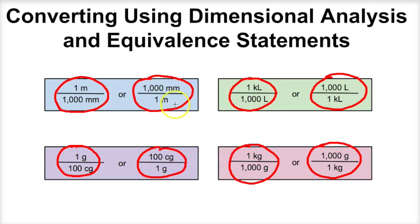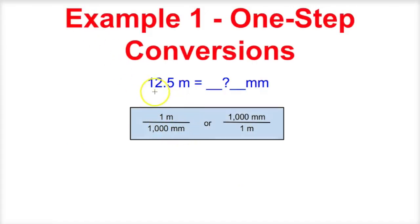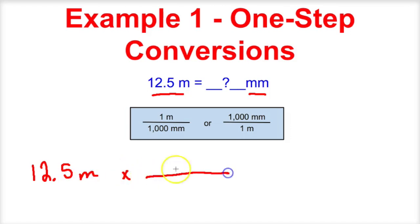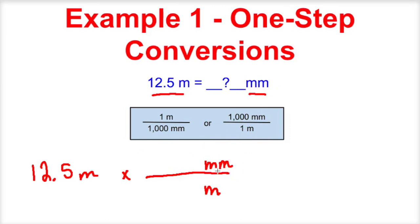So let's apply the concept of equivalent statements to solve several different types of problems using dimensional analysis. In this first example, we have 12 and a half meters and we want to figure out how many millimeters this is. We have 12 and a half meters, and what we want to do is cancel out the unit meter. So we're going to put meters at the bottom of our equivalent statement so that when we do our math, these units will cancel out. We're trying to convert this to millimeters, so we're going to put millimeters at the top. We'll use the equivalent statement that has millimeters on top and meters on the bottom, and we know that there are 1,000 millimeters in one meter.